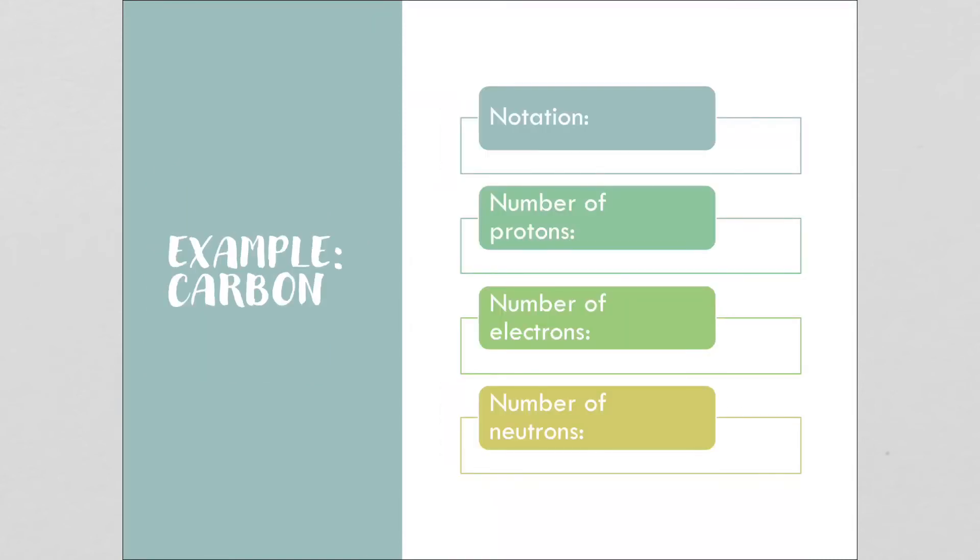The first element we'll practice with is carbon. Carbon's notation would look like this: the symbol is C. If you look up on the periodic table, you'll see that its mass number is 12 and its atomic number is 6. The atomic number is equal to the number of protons, so we have 6 protons. We also have 6 electrons because the number of protons and the number of electrons match in an atom.